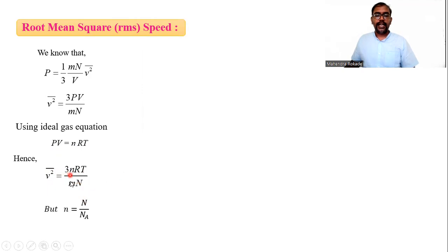In that formula, n is the number of moles, given by the formula: number of molecules of the gas divided by Avogadro number. Let me substitute small n as n upon NA. What is the next step? You can see here.